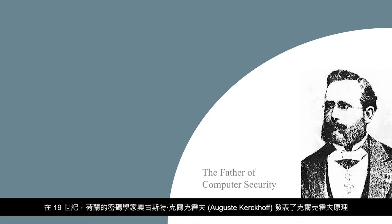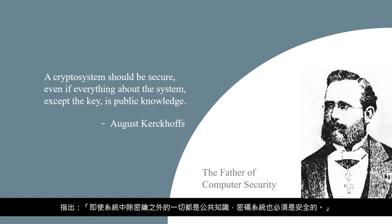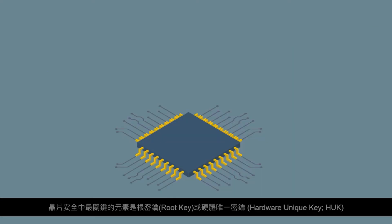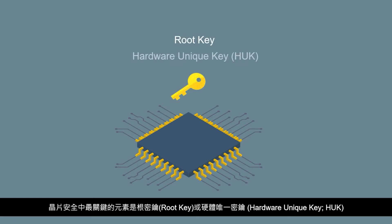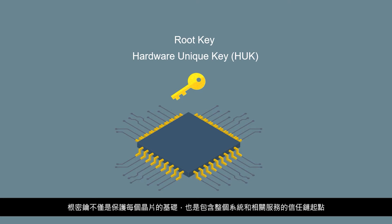In the 19th century, Netherlands cryptographer Auguste Kirchhoff created Kirchhoff's principle, stating that a crypto system should be secure even if everything about the system except the key is public knowledge. The most crucial element in chip security is the root key or hardware unique key. The key is the starting point not only for protecting each chip but also the chain of trust that encompasses the entire system and associated services.